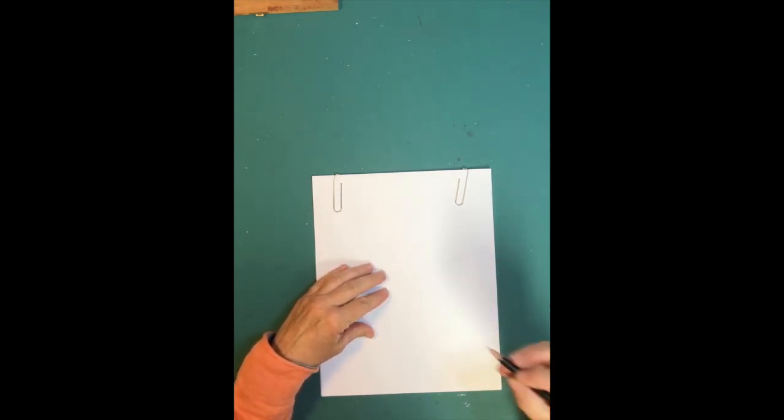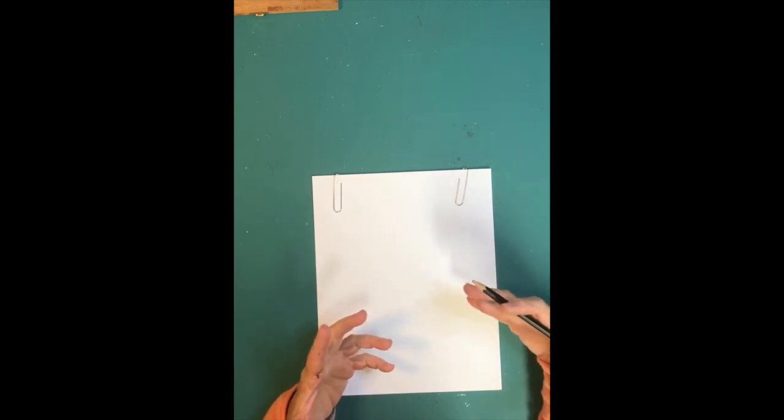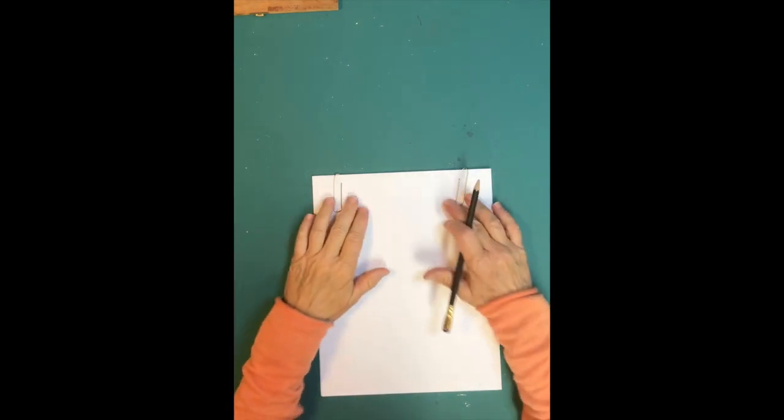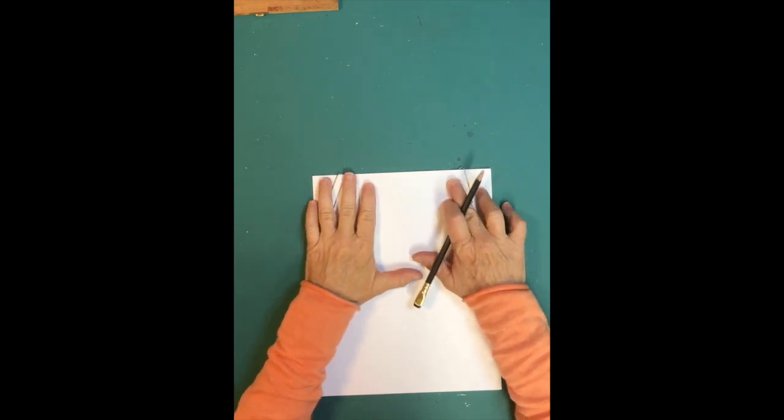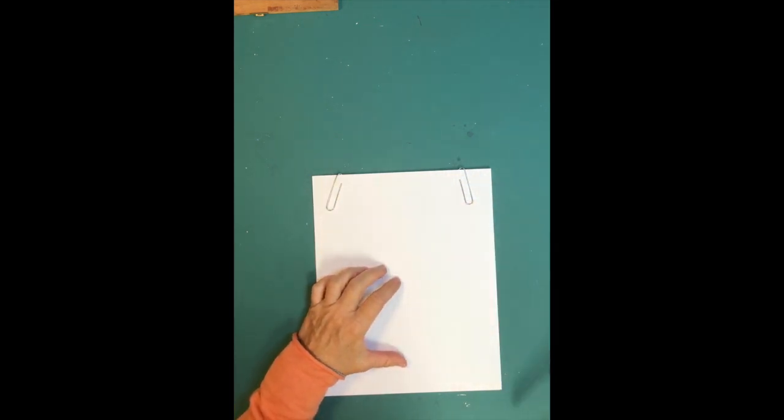I like to use a couple pieces of paper when I'm drawing because it sort of pads the paper so that when you put your pencil down or your pen down, it's a softer surface to draw on, and these paper clips keep the paper in place so they're not moving around.